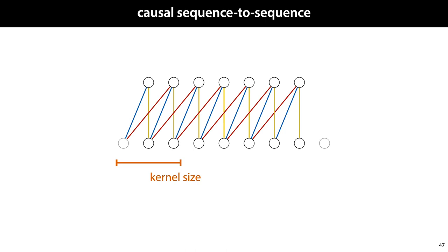And pictured here is a causal convolution. Note that the use of the word 'causal' doesn't imply that we're performing causal inference. That is, we're not making guaranteed distinctions between correlation and causation, as we discussed in the social impact videos. It's simply a way of ensuring that the model cannot see into the future. The word 'causal' is applied here in an informal sense.